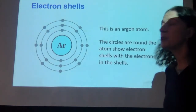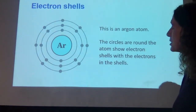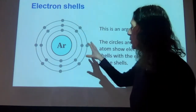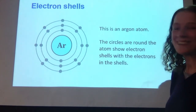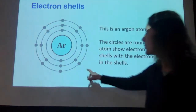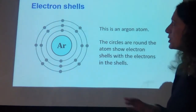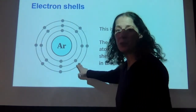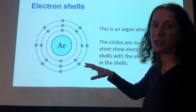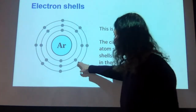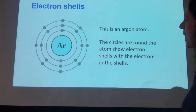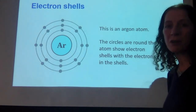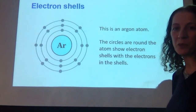The first thing to do is to look at an element. Here is an atom of argon. The circles show the electron shells — hopefully you'll have seen this in earlier work on atomic structure. The subatomic particles in those electron shells are called electrons. This example of an argon atom shows us the rules for filling electron shells with electrons.